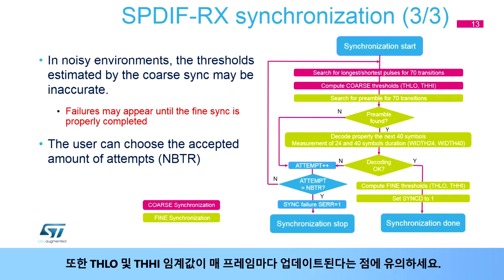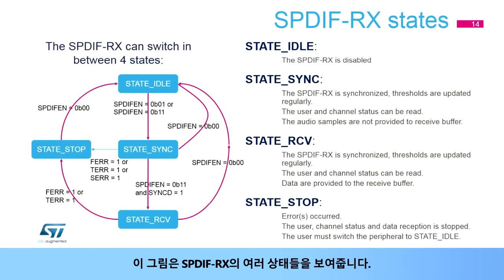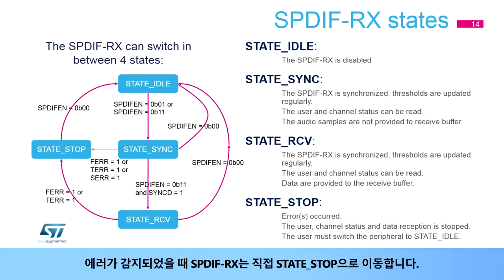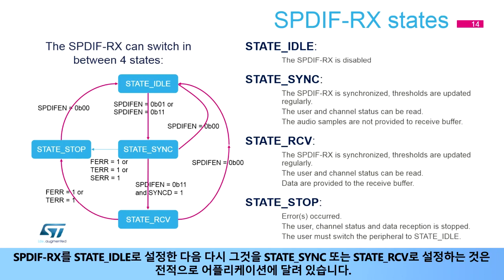The figure shows the different states of the SPDIFRX. The state can be changed by the application via the field SPDIF_EN, or by the SPDIFRX hardware mainly if errors are detected. When an error is detected, the SPDIFRX directly moves to the stop state. It is up to the application to set the SPDIFRX to the idle state and then set it again to the sync or RCV state.